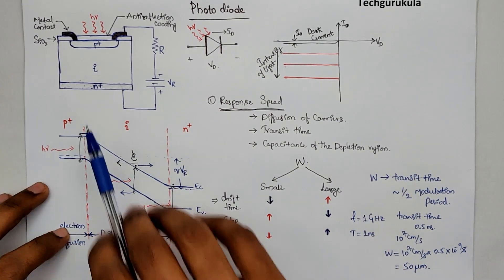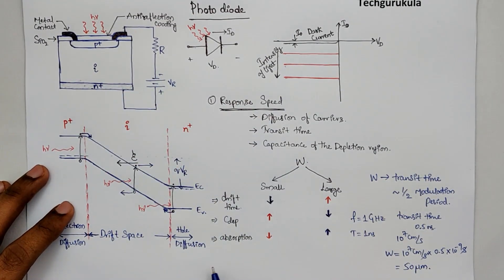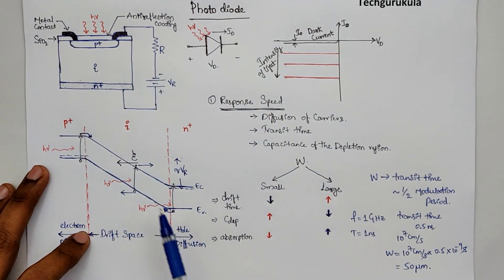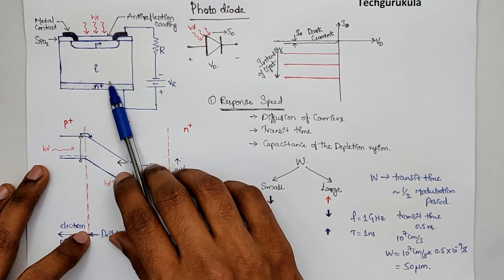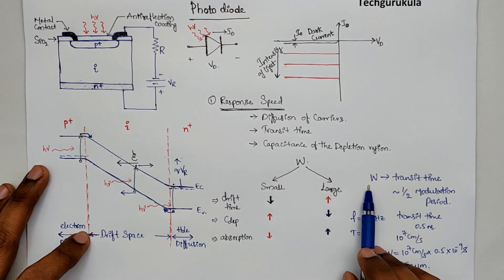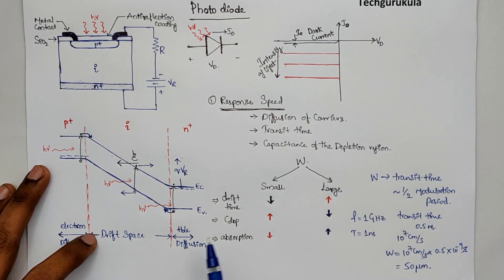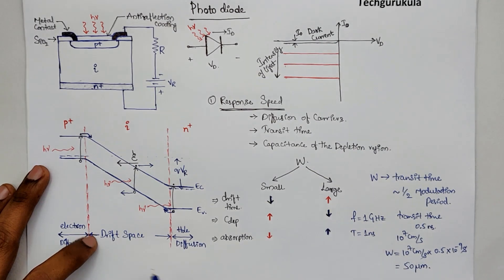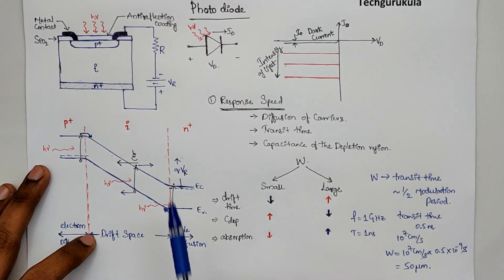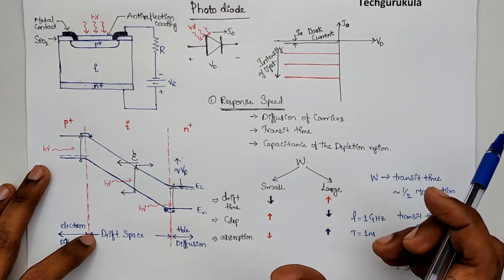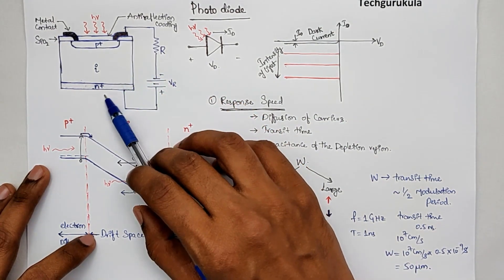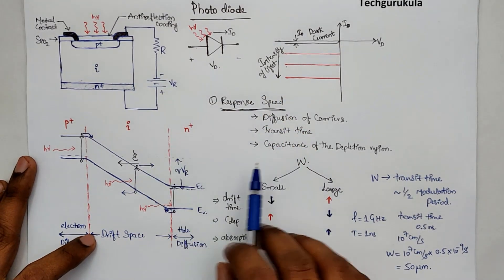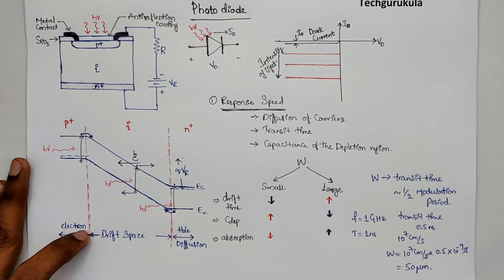One of the most important advantages of using a PIN diode as a photo detector is that we have a very large intrinsic region whose thickness we can choose, allowing us to tailor the depletion width W in our control. In a normal P-N junction diode, controlling the depletion width requires adjusting doping levels, but you cannot get a large depletion region while keeping high doping. In a PIN diode, this is possible, which is why PIN diodes are predominantly used as photo detectors.